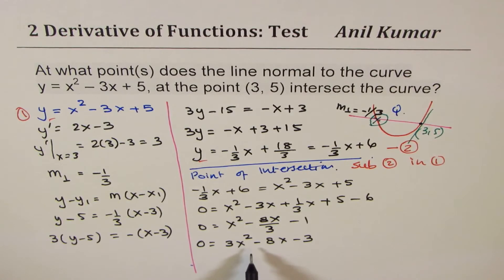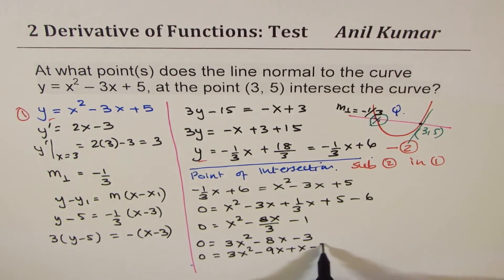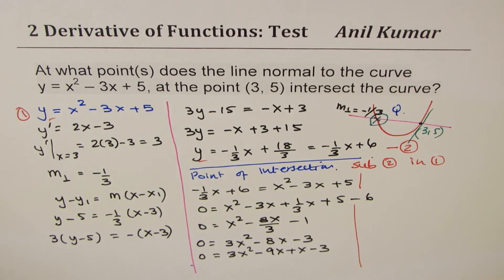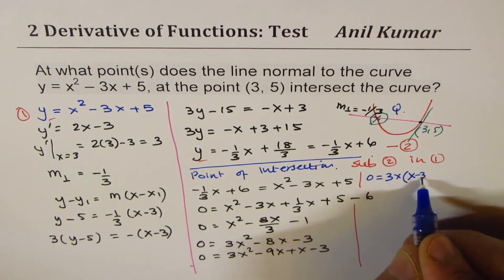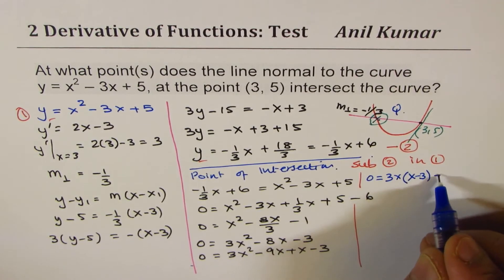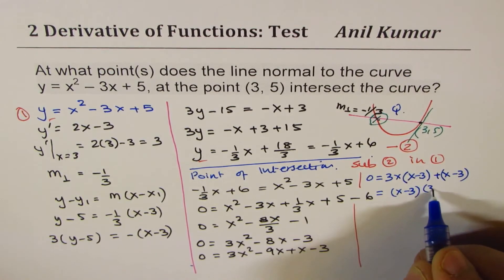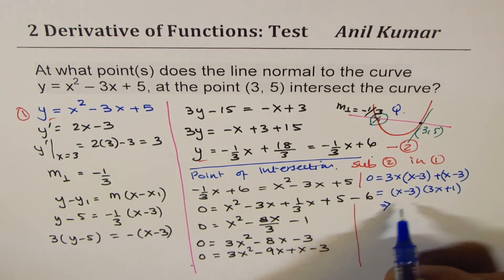We can factor 3x² - 8x - 3. The product is -9, and we need factors summing to -8: that's -9 and +1. So we rewrite as 3x² - 9x + x - 3. Taking 3x common from the first pair: 3x(x - 3) + 1(x - 3) = 0. Therefore (x - 3)(3x + 1) = 0.